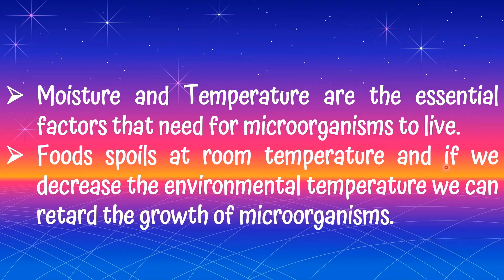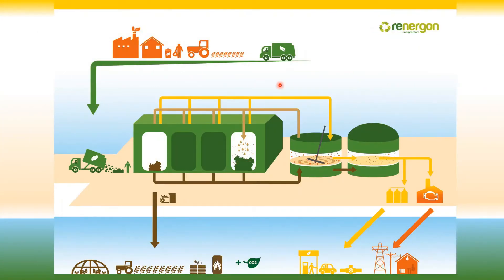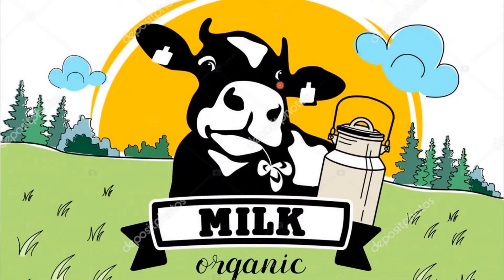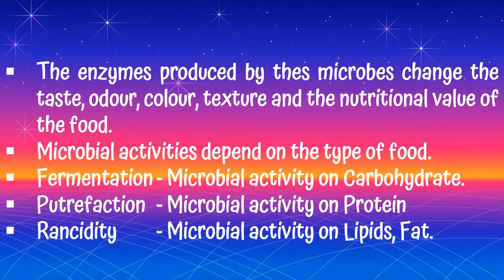Food and temperature are essential factors for microorganism growth. Food spoils at room temperature, but if we decrease the environmental temperature, we can retard the growth of microorganisms. We can keep foods inside refrigerators to control the temperature and retard microbial growth. The enzymes produced by microorganisms change the taste, odor, color, texture, and nutritional value of food. Microbial activity types include fermentation (on carbohydrates), putrefaction (on proteins), and rancidity (on lipids and fats).